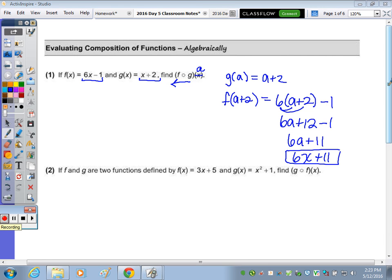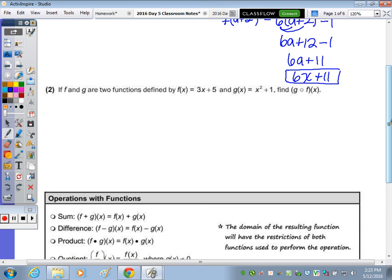Number 2, if F and G are two functions defined by F of X equals 3X plus 5, so that's a linear function, and then G of X equals X squared plus 1, that's a quadratic function, find G of F of X.